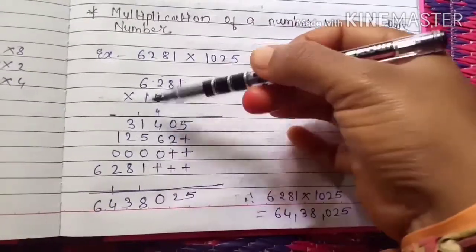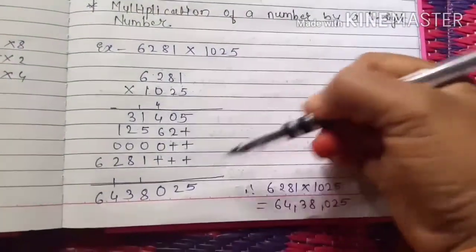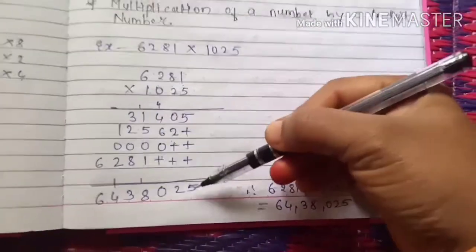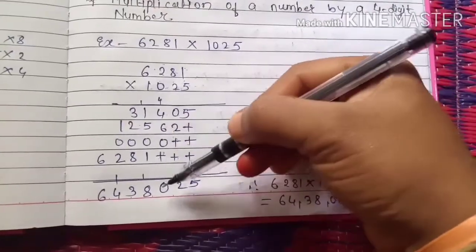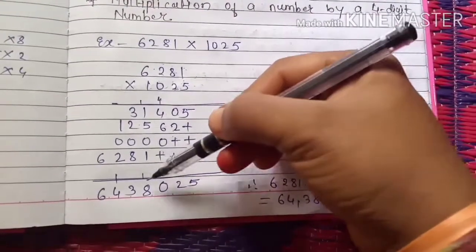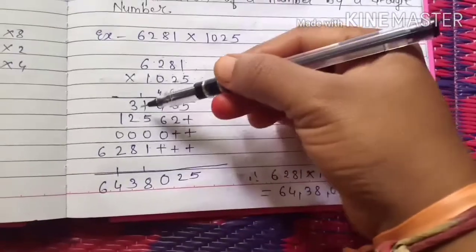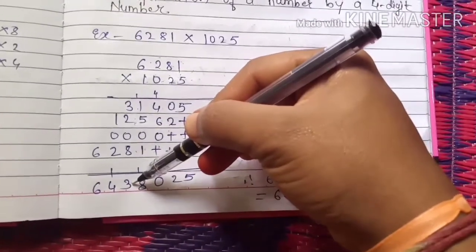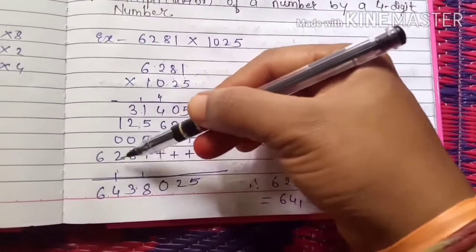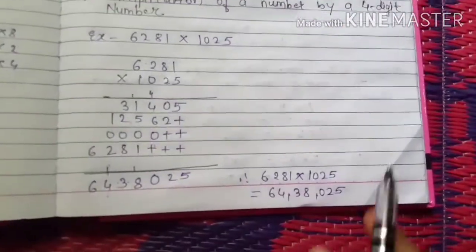After that we have to add this number. 5 is to 5, 2 plus 0 is 2, 6 plus 4 is 10, 1 will go as a carry. 1 plus 1 is 2, 2 plus 5 is 7, 7 plus 1 is 8. 3 plus 2 is 5, 5 plus 8 is 13, 3 will go downside, 1 will go as a carry. 1 plus 2 is 3, 3 plus 1 is 4, 4 is to 4, 6 is to 6.